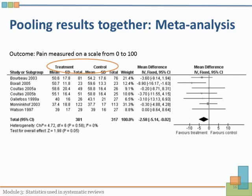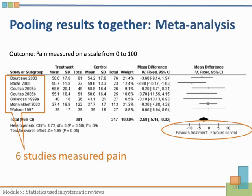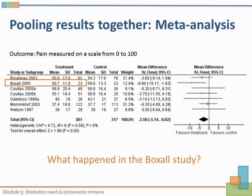In this example, pain was measured after giving glucosamine and after giving the placebo. This is a forest plot of all the studies that measured pain after giving glucosamine or after giving the placebo, which is typically called the control group. In this meta-analysis, you can see that pain was measured on a scale from 0 to 10. It was measured in six studies: Borbo, Boxall, Kutlas, Galadors, Monokoff, and Watson. In the meta-analysis, you can see what happened in each of those studies.